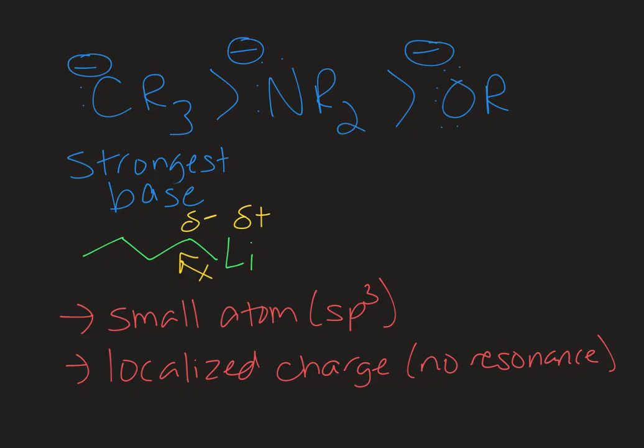This is your series of strong bases in organic chemistry. The oxide derivative, OR-, is going to be strong enough for most things. The strongest of this series is the carbon with a negative charge on it.